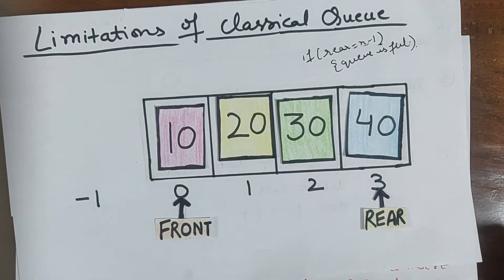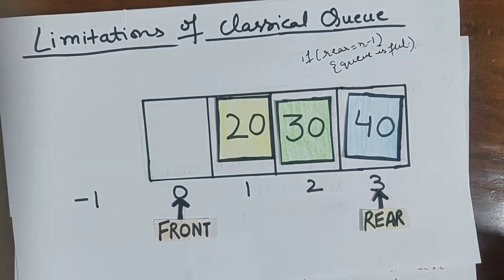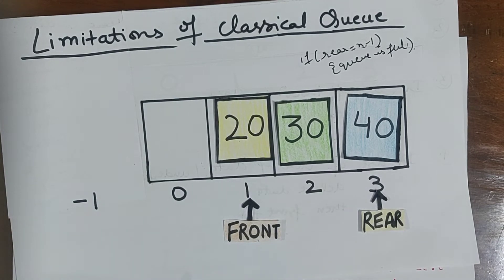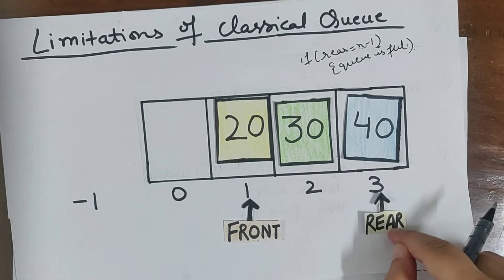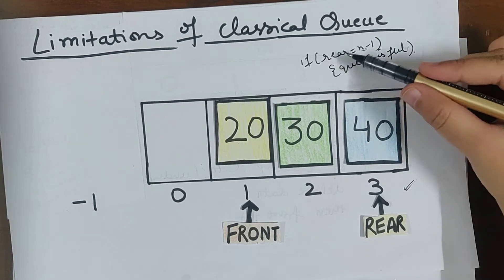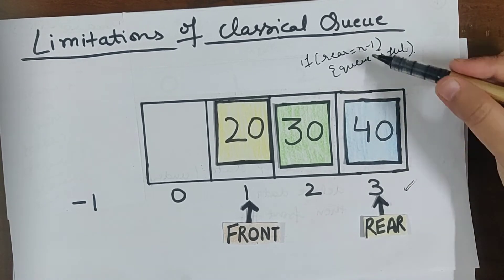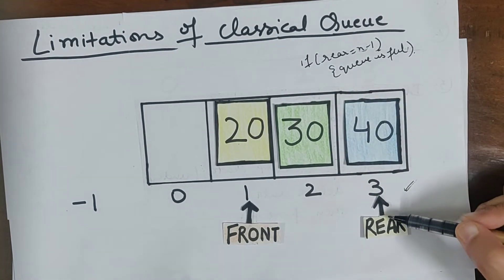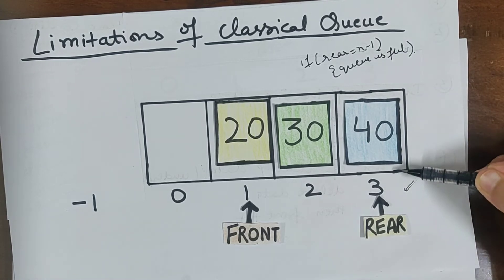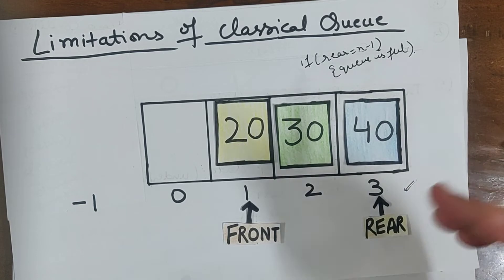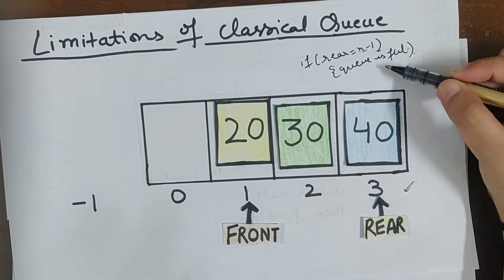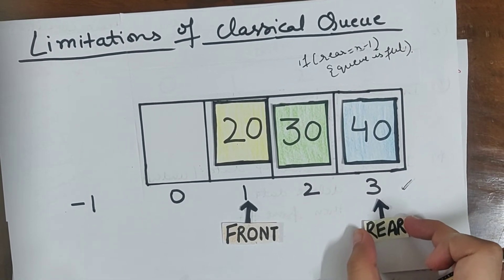Now let's say I delete data 10. Front will become front plus plus. Now there is a space, but we can't insert new data because the condition rear equals n minus 1 is still true. In my scenario n is 4, so rear equals 3, which is 4 minus 1. If rear reaches 3, we can't insert new data regardless of front's position.